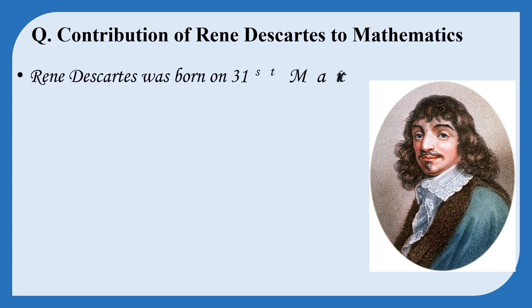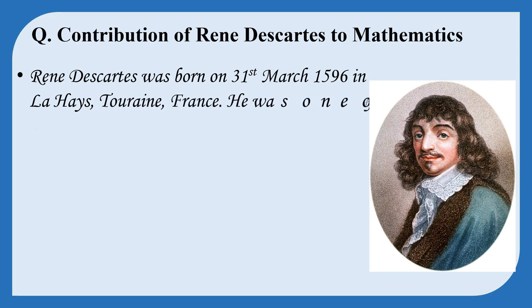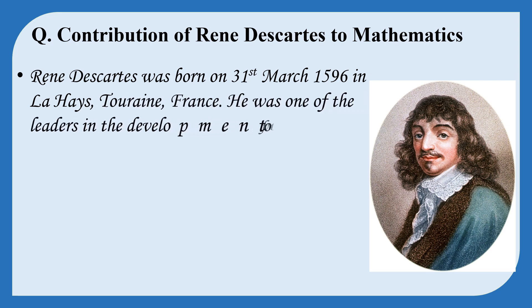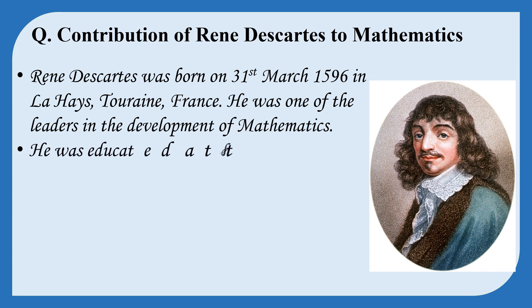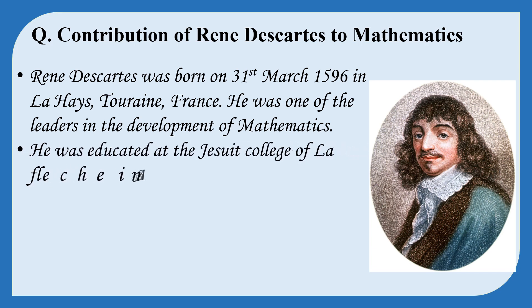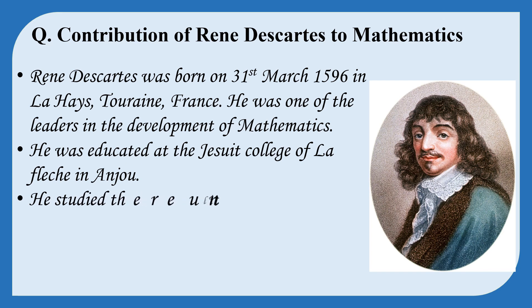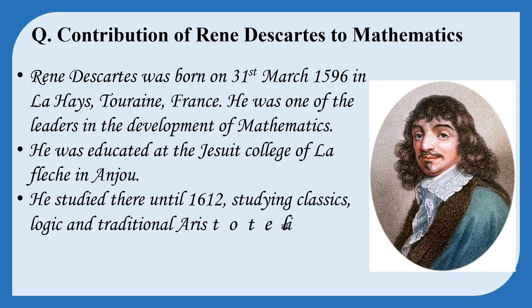René Descartes was born on the 31st of March 1596 in La Haye, Touraine, France. He was one of the leaders in the development of mathematics. He was educated at the Jesuit College of La Flèche in Anjou, where he studied until 1612, studying classics, logic, and traditional Aristotelian philosophy.